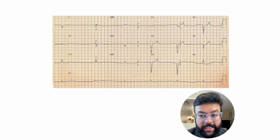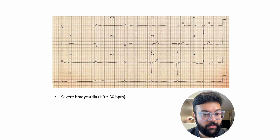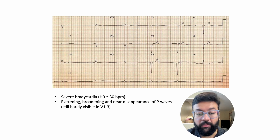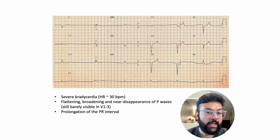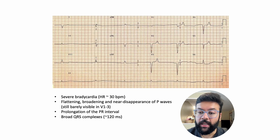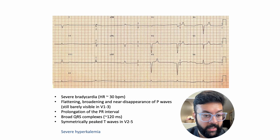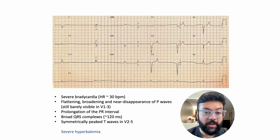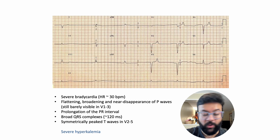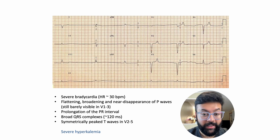This last case shows severe bradycardia. You can barely see P waves — there is flattening and a prolonged PR interval — and the QRS complex is wide. The electrolyte abnormality that can cause this is severe hyperkalemia. Remember: tall T waves, and if it progresses very badly, this can ultimately lead to death.